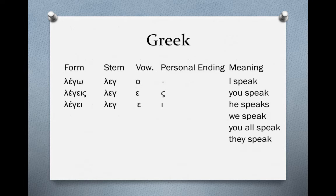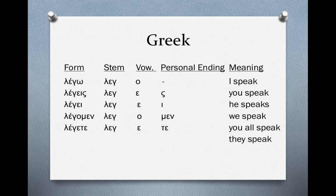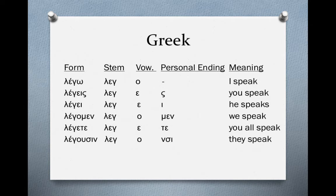The third singular is 'legei,' forming from the stem plus connecting vowel epsilon plus personal ending iota, meaning 'he, she, or it speaks.' Then 'legomen' — leg plus omicron plus personal ending -men — means 'we speak.' 'legete' has the personal ending tau-epsilon, indicating second person plural: 'you all speak.' And 'legousin' forms from leg plus omicron plus -nsi, which in its final form converts to -sin — so when we see that ending we know it's third plural: 'they speak.' The personal endings in this column are really important to learn to get person and number right. All of these are active voice.